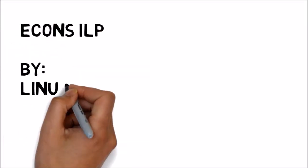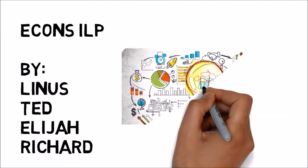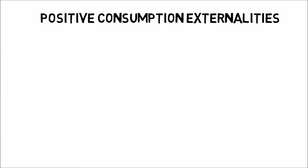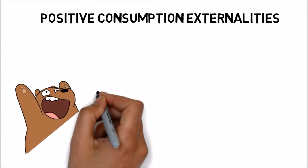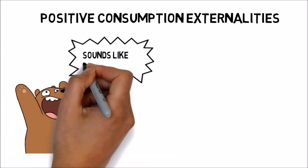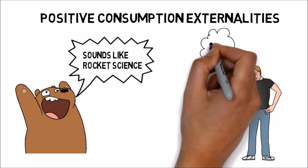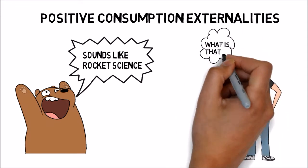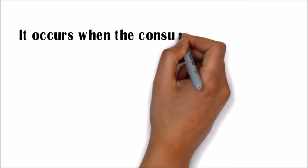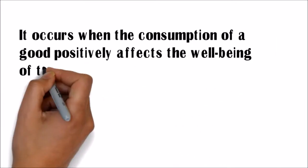Econ's IRP by Linus, Ted, Elijah, and Richard. Positive Consumption Externalities — it occurs when the consumption of a good positively affects the well-being of third parties.